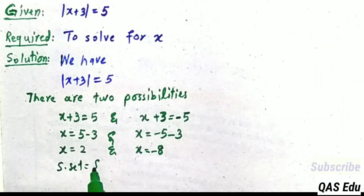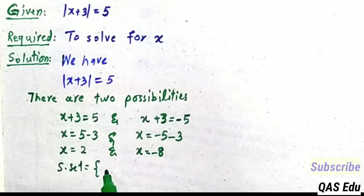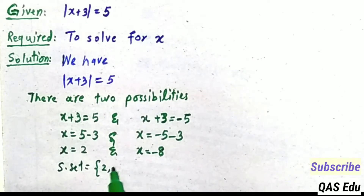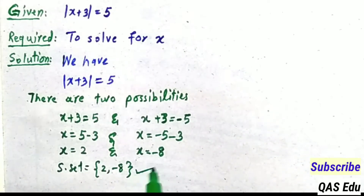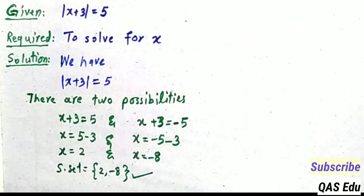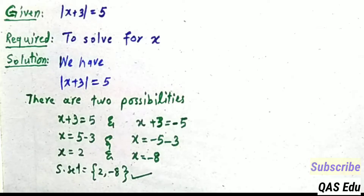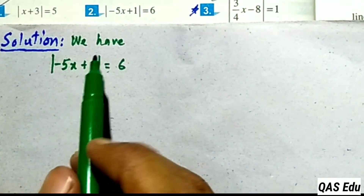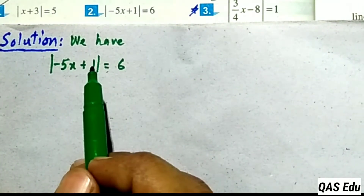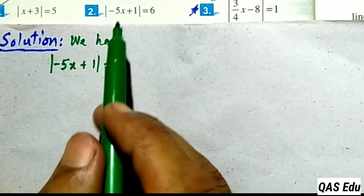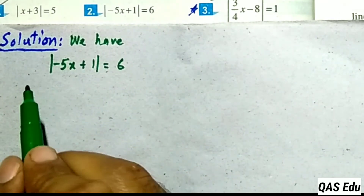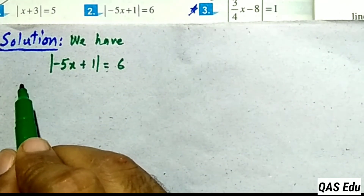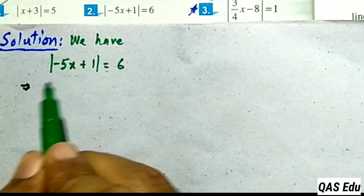The solution set for the given equation has two answers: minus 8 and plus 2. Question number 2: let's find the solution for this equation. Directly state the given and required. Question number 1 is complete.